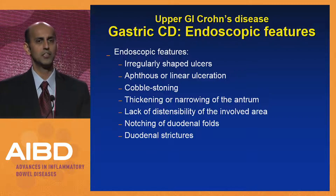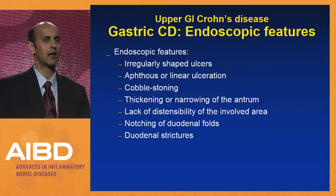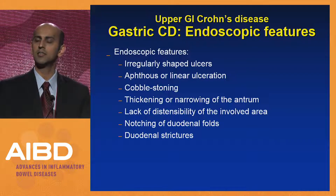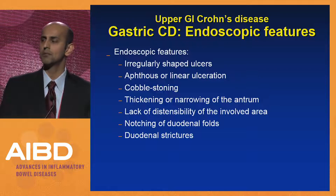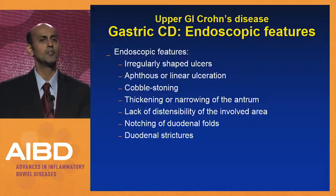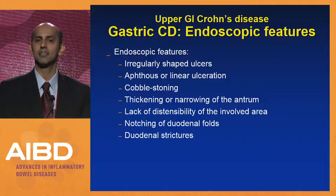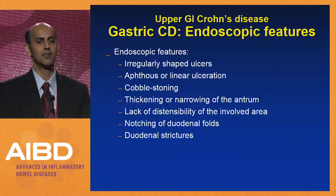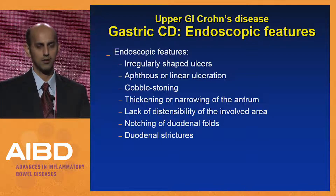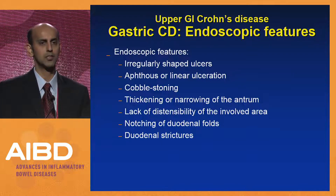Endoscopic features of gastric Crohn's disease include irregularly shaped ulcers, linear ulcers, and cobblestoning. Sometimes it presents as a nondistensible stomach, or you see thickening and narrowing of the antrum without clear mucosal disruption. In the duodenum, you can see notching of the folds or duodenal strictures.